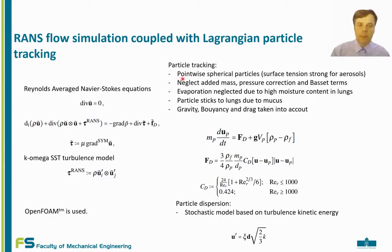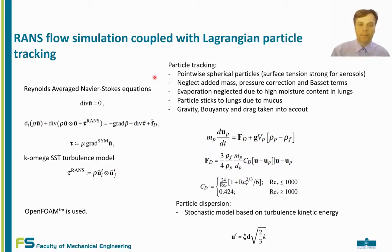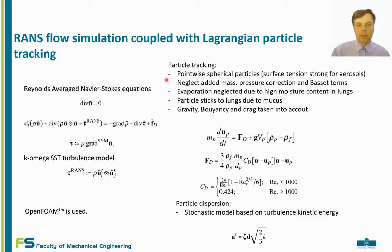In our first assumption for particle tracking, we consider pointwise spherical particles. Due to their small size, surface tension in water scales as one over radius, and the surface tension is strong enough that the approximation of spherical particles is valid. Furthermore, the aerosols follow the fluid flow quite closely, so it is enough to consider them as pointwise since the Reynolds number of the flow over the particle is much less than one — we can consider this to be Stokes flow — and based on this we develop our mathematical model.